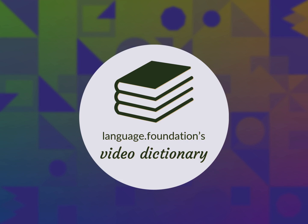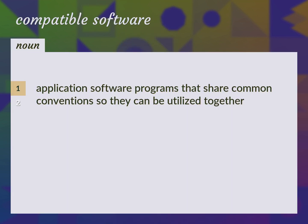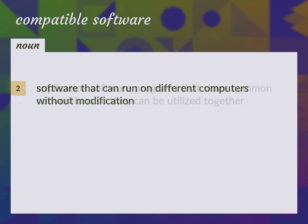Language.Foundation's Video Dictionary, helping you achieve understanding. Compatible software: application software programs that share common conventions so they can be utilized together. Software that can run on different computers without modification.